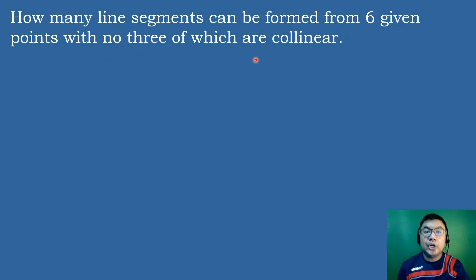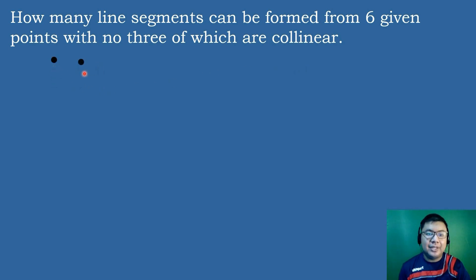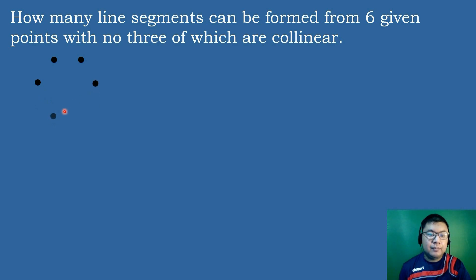In this example, we will draw 6 given points with no 3 of which are collinear. Collinear points are points that lie on the same line. We place the points so that no 3 are on the same line. We then identify if this situation illustrates combinations or permutations.